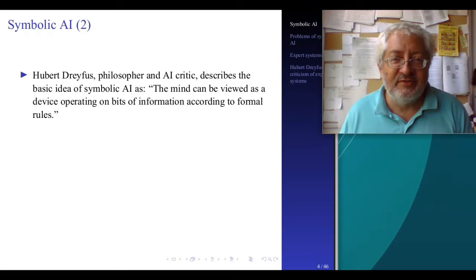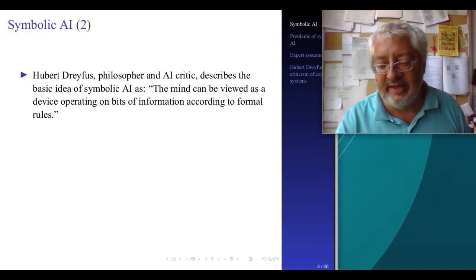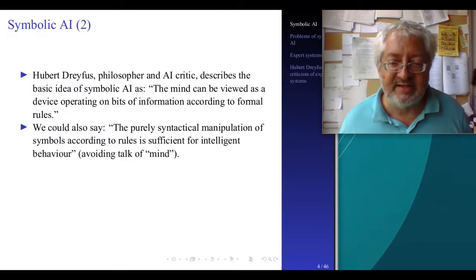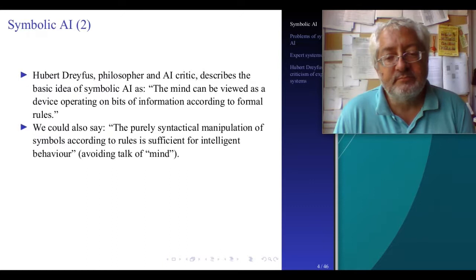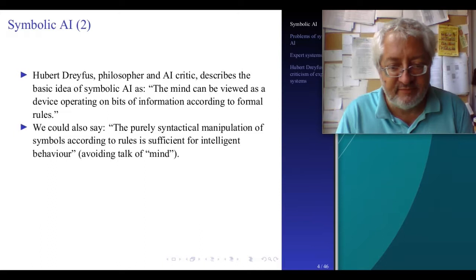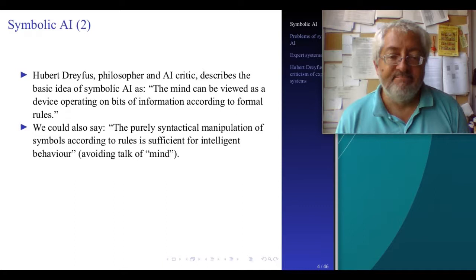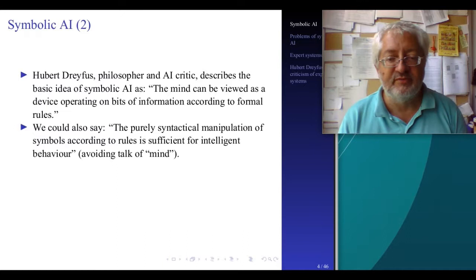Dreyfus is a little unfair because it's always easier to criticize a strong claim than a weak claim. I can give this a weak expression: the purely syntactical manipulation of symbols according to rules is sufficient for intelligent behavior. Now I avoided 'mind' — I'm talking of intelligent behavior, a weak AI claim. And you can see this is less controversial. Clearly the syntactical manipulation of symbols can be intelligent behavior, like in a calculator or in a chess playing program.